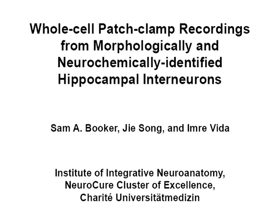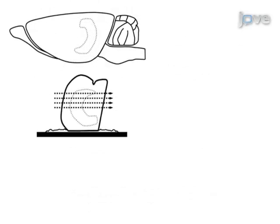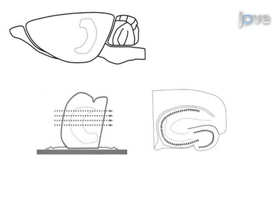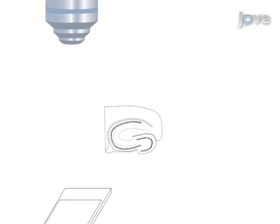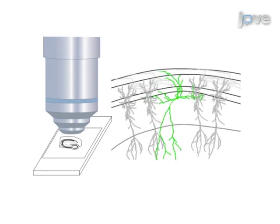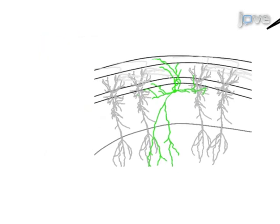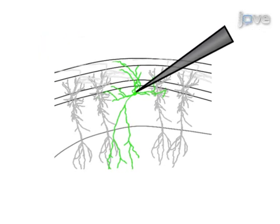The overall goal of this procedure is to characterize GABA-B receptor-mediated effects in identified hippocampal parvalbumin-positive interneurons. This is accomplished by first producing high-quality acute hippocampal slices. The second step is to use a video microscope to select neurons based on venous YFP expression and known characteristics of parvalbumin-positive neurons. Next, whole-cell patch clamp recordings are obtained.